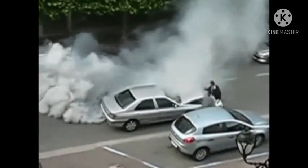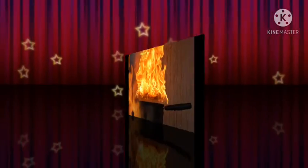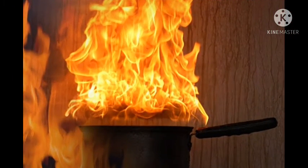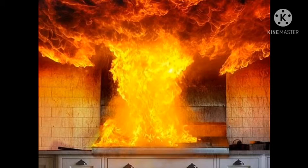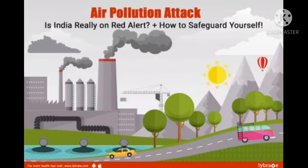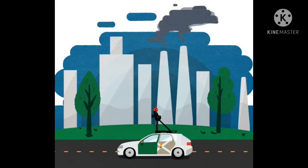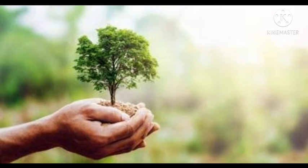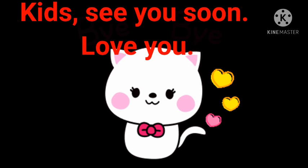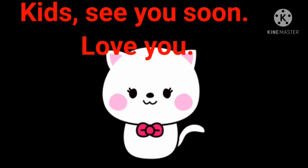What causes air pollution? We have smoke from cooking industries — all this smoke goes into the air and when we breathe it in, it causes harm to our health. Smoke from factories also causes air pollution. And how can we prevent this? By planting trees. Trees are very necessary; we need to plant trees so that we will have good air to breathe in. Kids, see you soon — love you, bye!